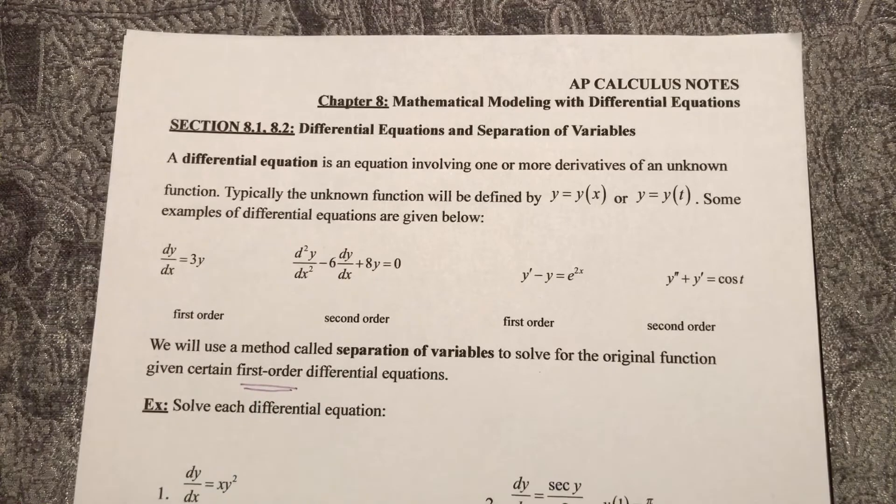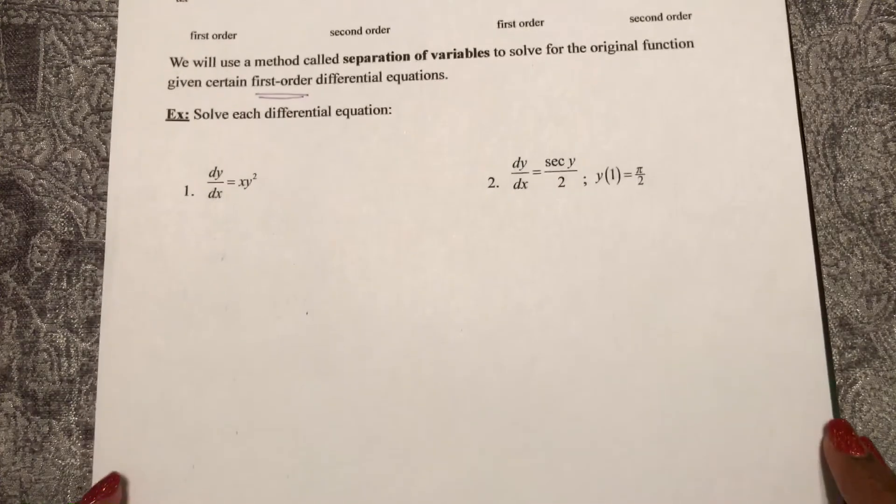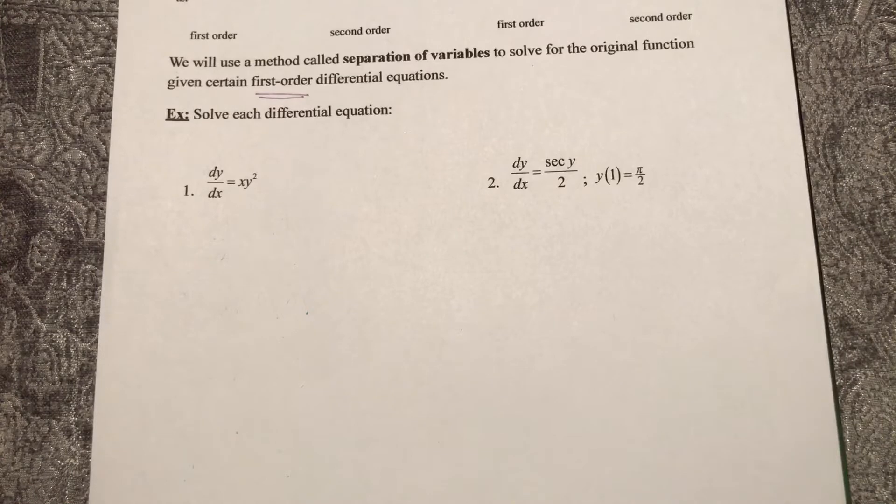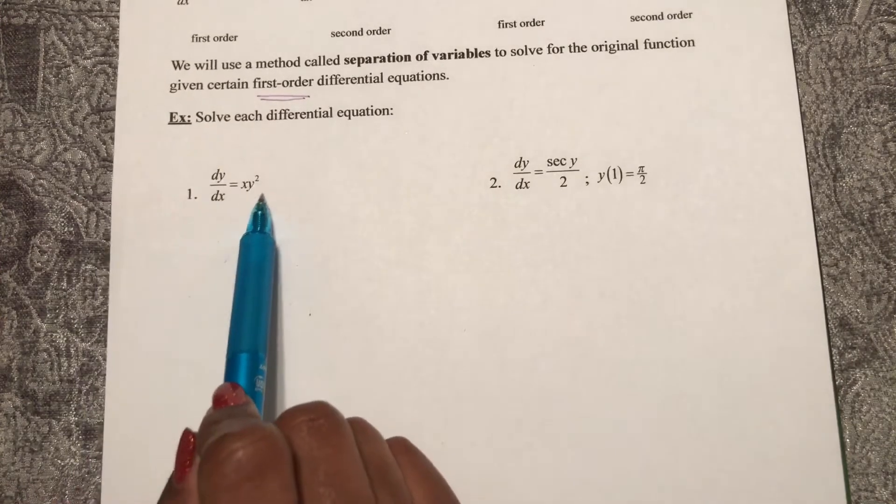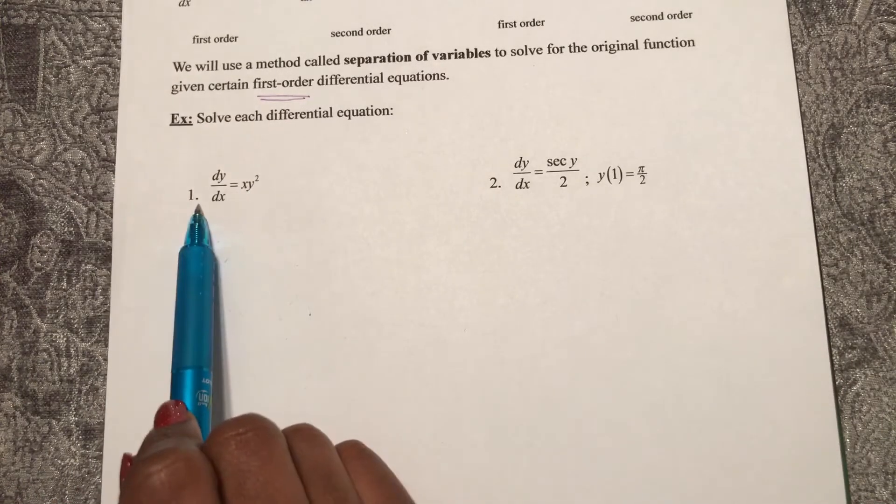Here in example 1, we want to separate our variables. That means I want to move my x's to one side and my y's to another.